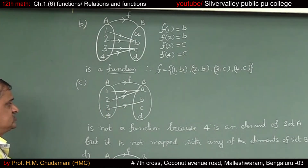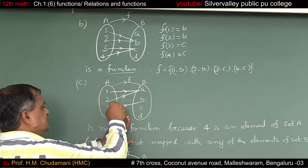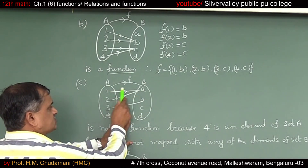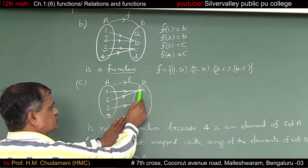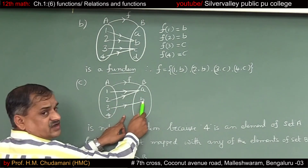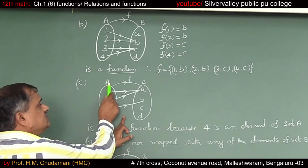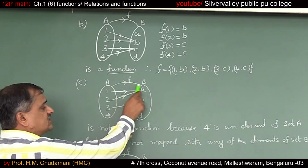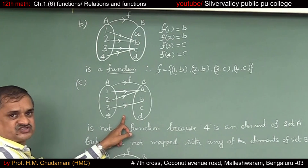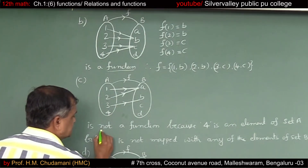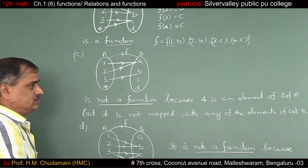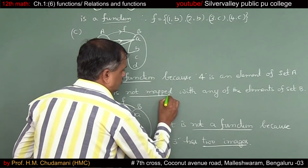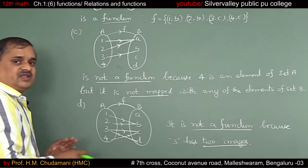Let us take another example. The set A = {1, 2, 3, 4} and B = {A, B, C, D}. 1 associated to A, 2 associated to A, 3 associated to B. Look at 4 — 4 is a member of A, 4 is an element of set A, but 4 is not associated to any of the elements of set B. That is why it is not a function — the element 4 belongs to set A but is not mapped to any element of set B.